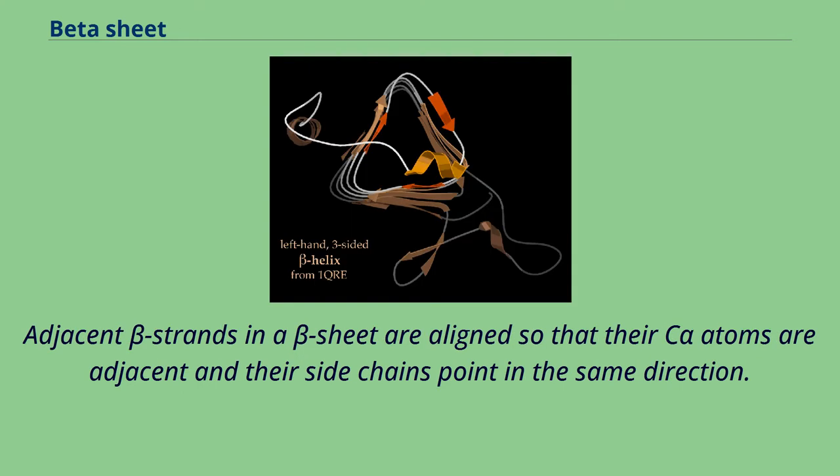Adjacent beta strands in a beta sheet are aligned so that their C-alpha atoms are adjacent and their side chains point in the same direction.